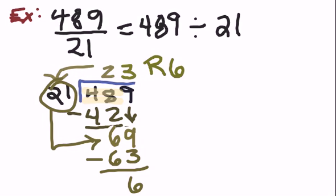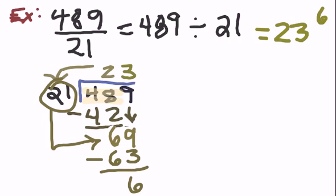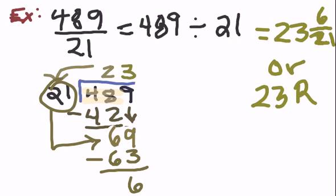So there would have been another round of 21 that could have gone into the number except it was six short. Or okay, the other way to do it would be to take your remainder and make a fraction. So here's the other option: you could say the answer would be 23 and 6 over the divisor of 21. So that's another option. So 23 and 6 over 21, 6 21sts, or 23 with a remainder of 6.